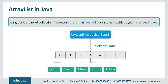ArrayList is a part of the collection framework and is the implementation of the List interface, where elements can be dynamically added or removed from the list. Also, the size of the list is increased dynamically if elements are added more than the initial size. Though it may be slower than standard arrays, it can be very helpful in programs where lots of manipulation in the array is required. ArrayList is initialized by a size; however, the size can increase if the collection grows or shrink if objects are removed.